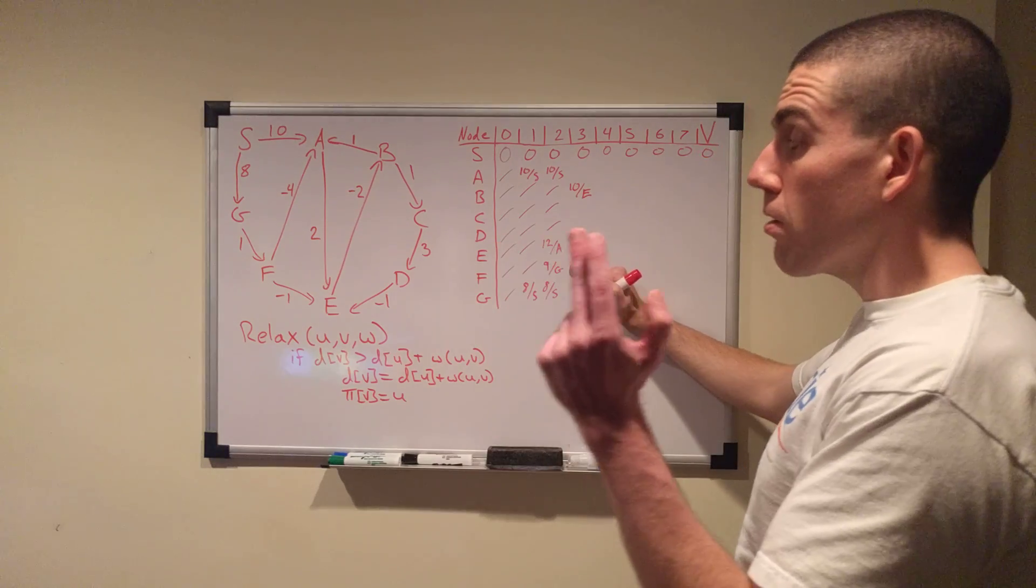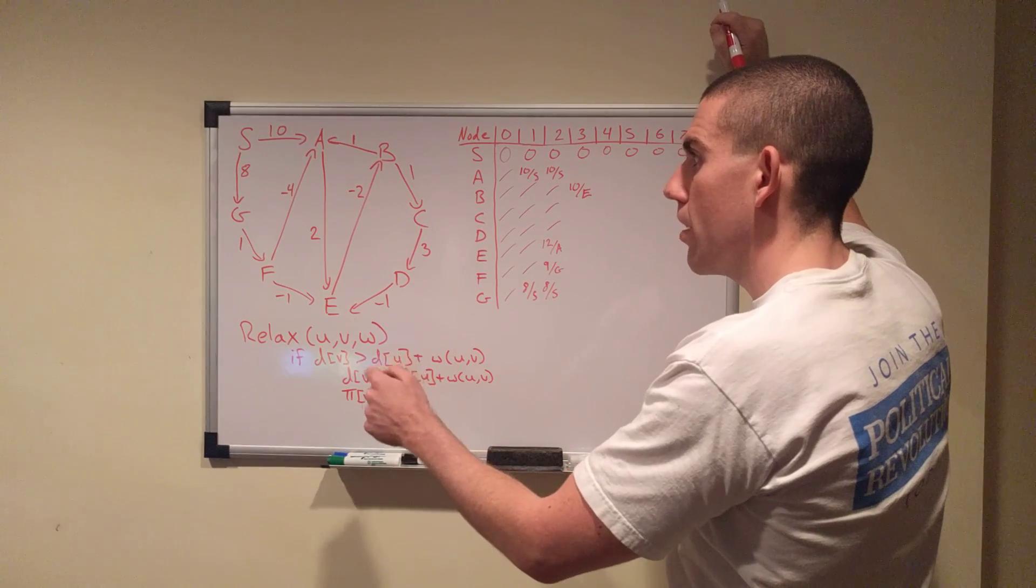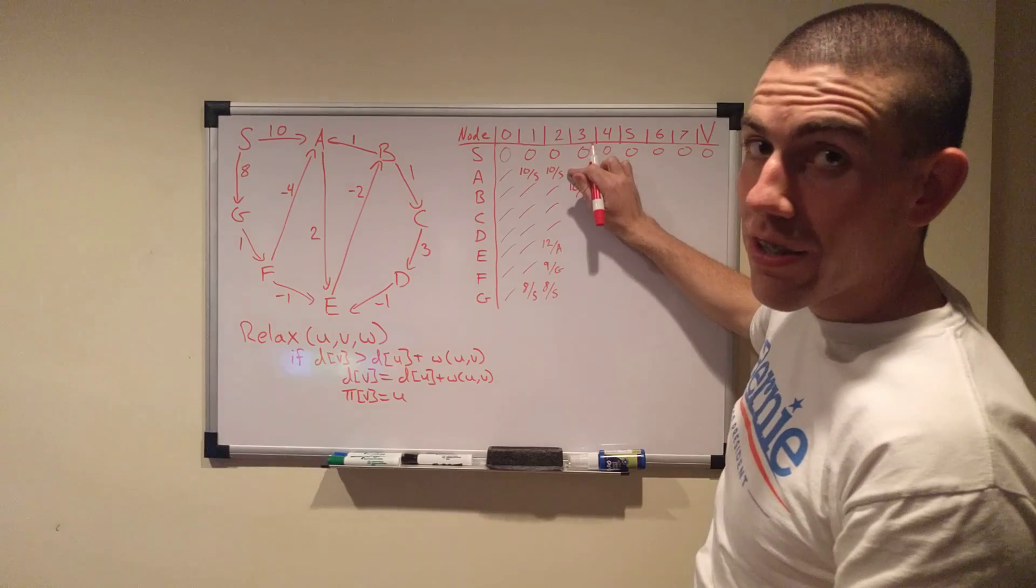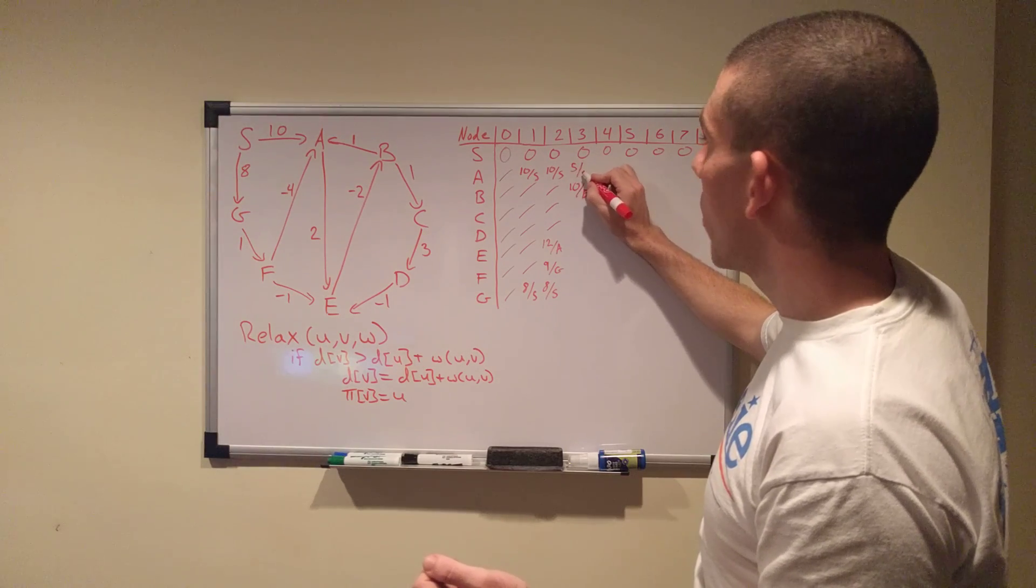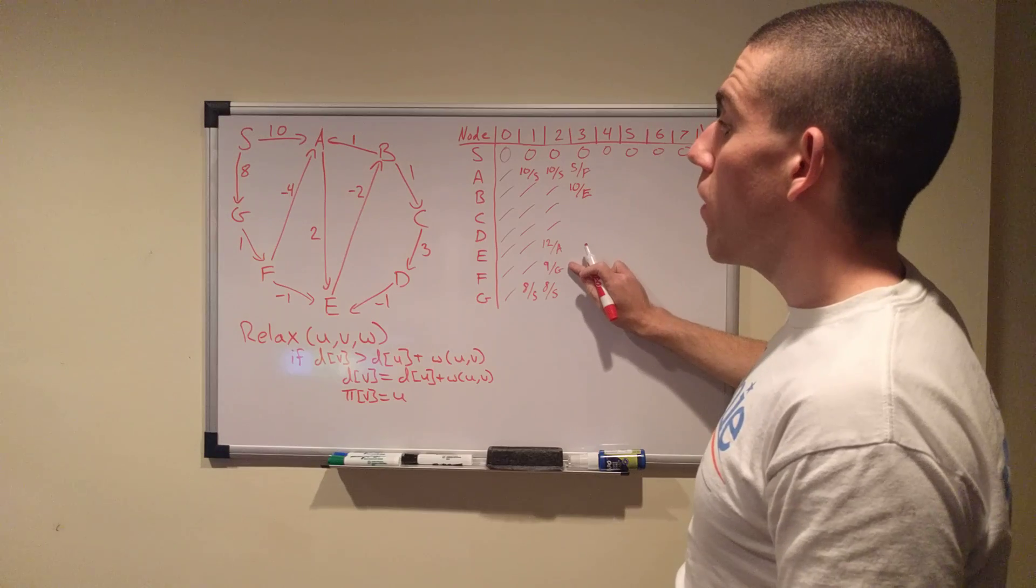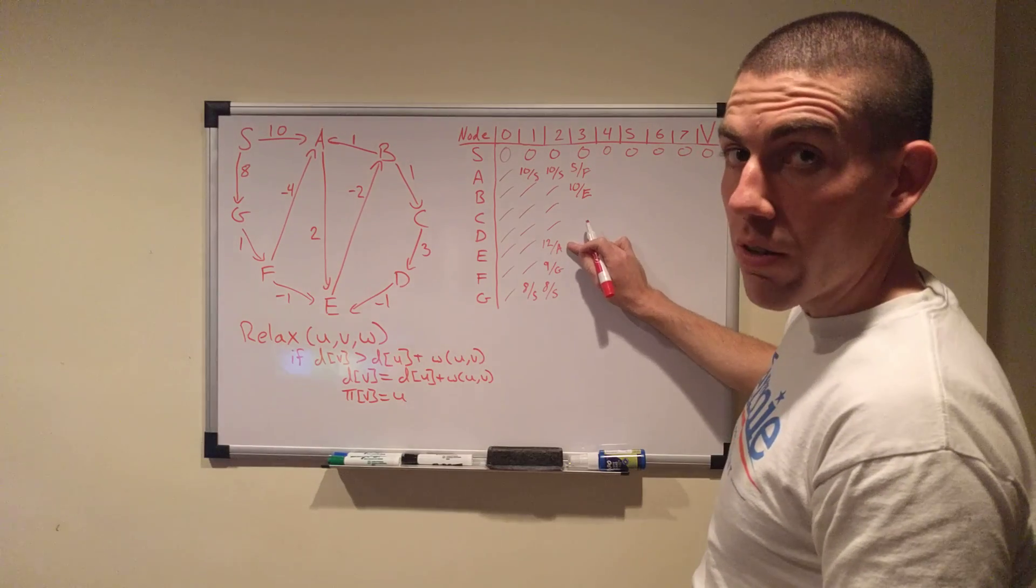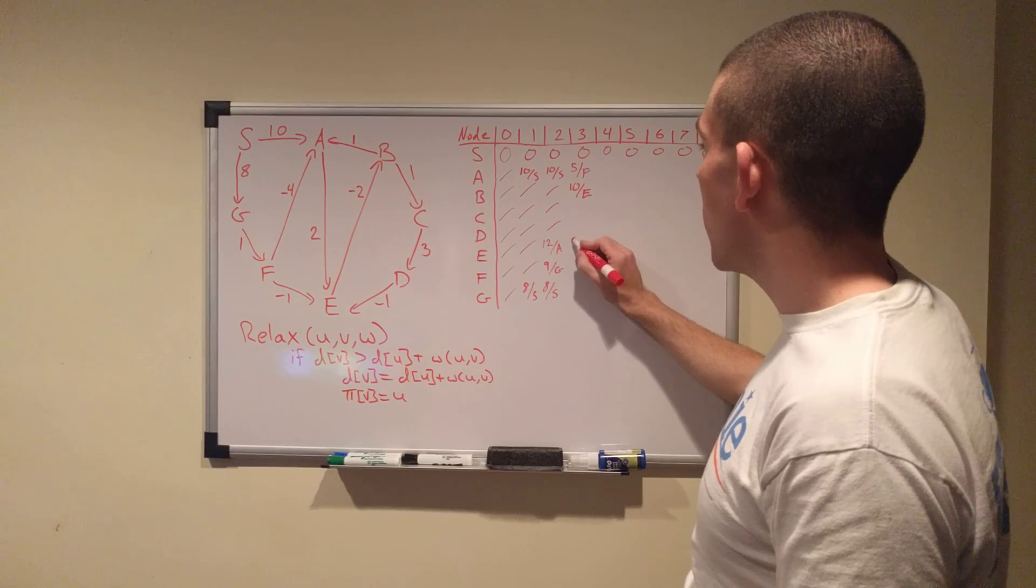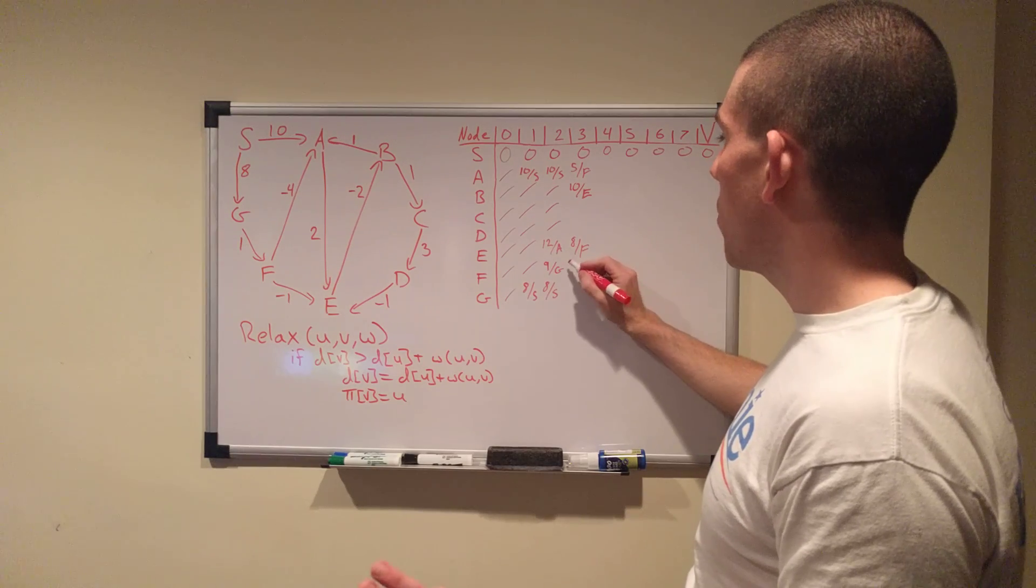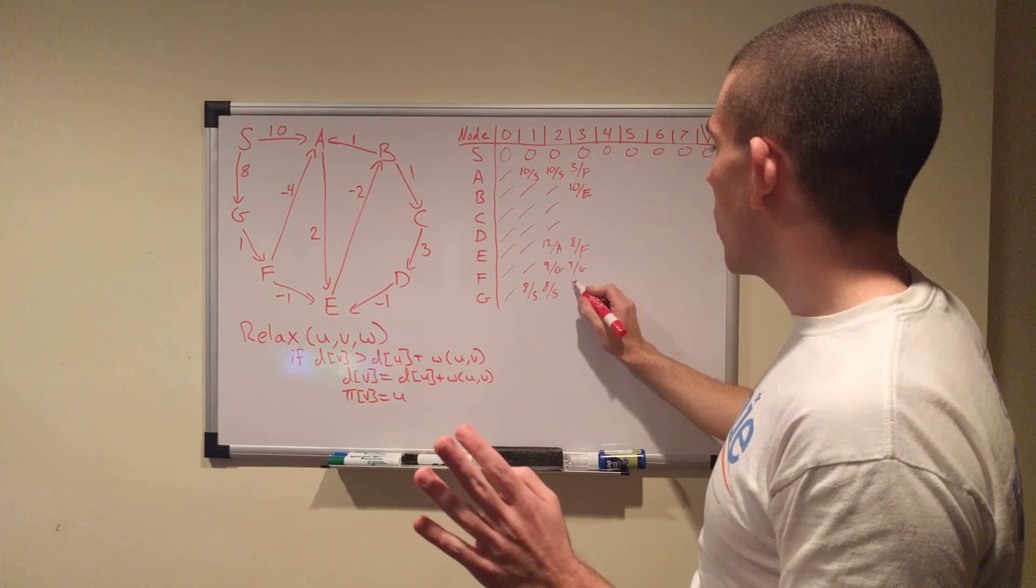Now, we go on to F. F has two outgoing negative edges, so you know something's going to happen. So, F has a cost of 9, goes to A at a cost of negative 4, which means that you can get to A at a cost of 5 if you go from F. So, 5 is less than 10. So, we're just going to go ahead and put that in there. 5 from F for A. We just halved the cost of getting to A. F also points to E at a cost of negative 1, meaning that you can get to E at a cost of 8 if you go from F. E's current cost is 12, which is greater than the new cost we just found. So, we're going to update that with 8 coming from F.